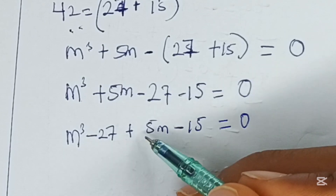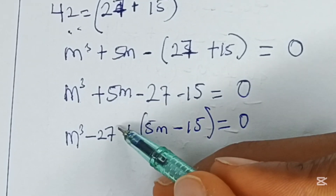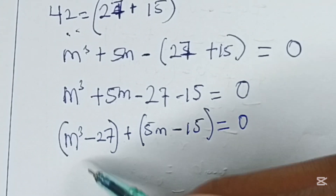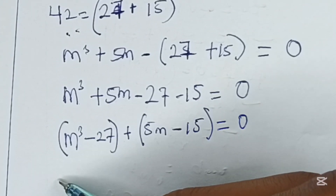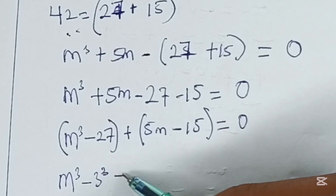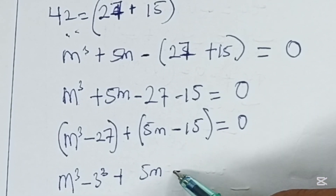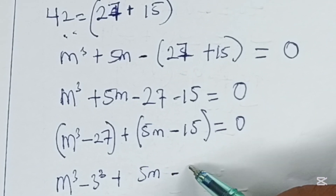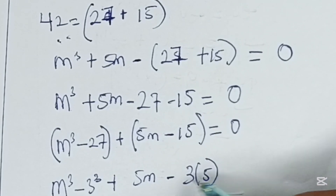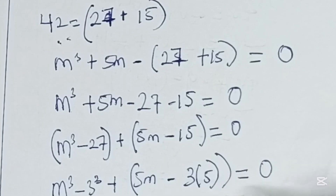Now we can group this and group this. So we can see from here that we have m cubed minus 3 cubed plus 5m minus 3 times 5, which is equal to 0.